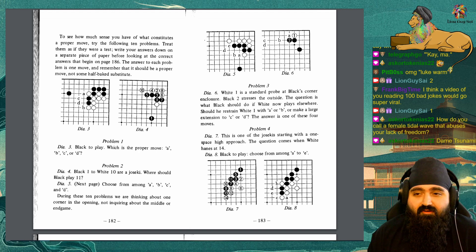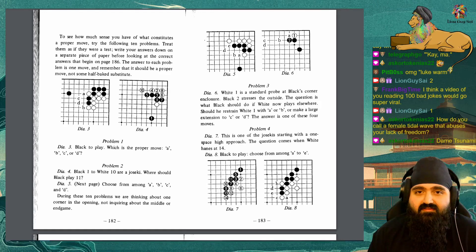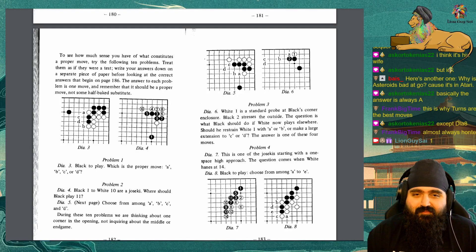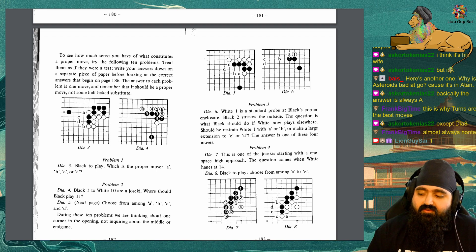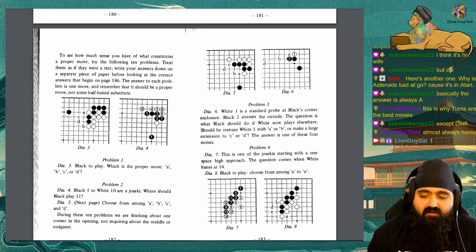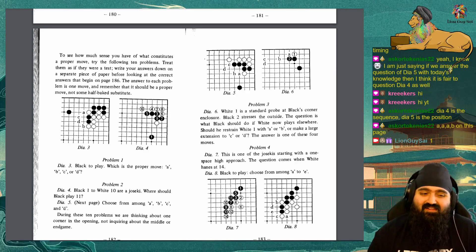The answer to each problem is one move, and remember that it should be a proper move, not some half-baked substitute. Problem 1. Diagram 3. Black to play. Which is the proper move? A, B, C. Problem 2. Diagram 4. Black 1 to White 10 are a joseki. Where should Black play 11? Diagram 5 on the next page. Choose among A, B, C, and D. During these 10 problems, we are thinking about one corner in the opening, not inquiring about the middle or endgame.